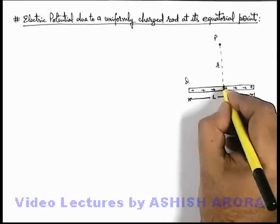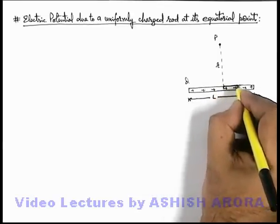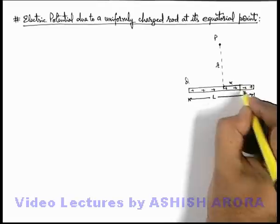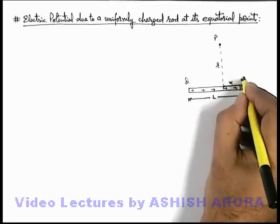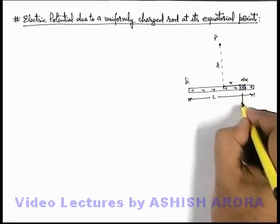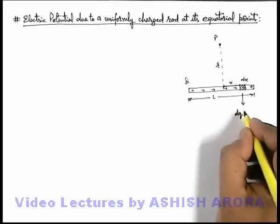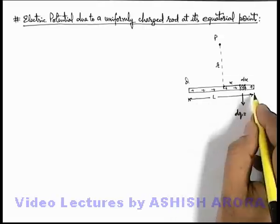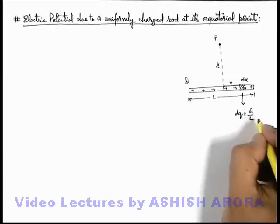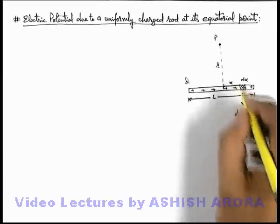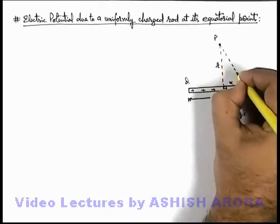In this situation, at a distance x from the center of rod we consider an element of width dx. On this element we can directly state the charge will be dq, and as the charge is uniformly distributed it can be written as Q/L dx.